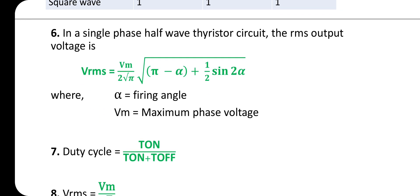In a single-phase half-wave thyristor circuit, the RMS output voltage V_rms = V_m / (2√π) × √(π − α + (1/2)sin2α), where α is the firing angle and V_m is the maximum phase voltage.